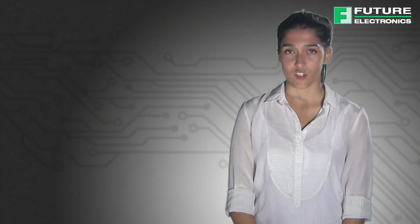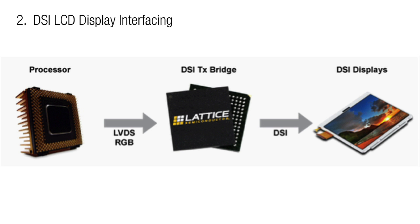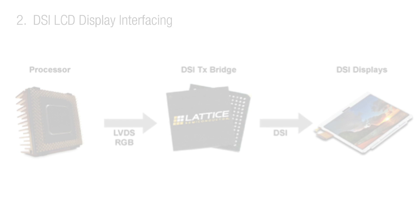Example applications of the Mach XO3 FPGA include CSI2 image sensor interfacing from one to four lanes of CSI2 at up to 800 megabits per second, with RAW, YUV, or RGB supported. DSI LCD display interfacing supports DSI formats RGB, YCBCR, and user-defined. The input bus can also be DSI to enable LCD screen replacement.